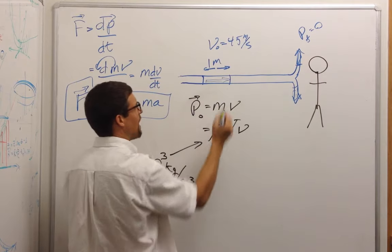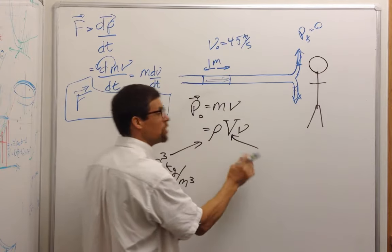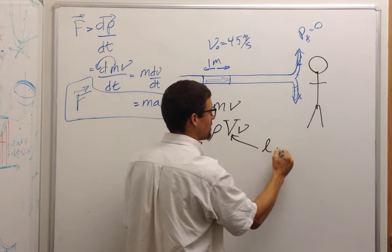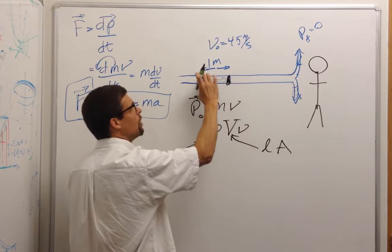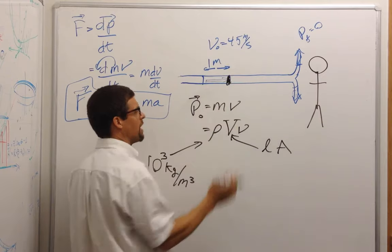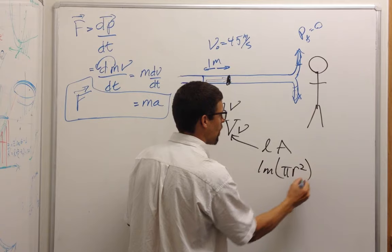So what's the volume of this going to be? Well, it's one meter long. This is a cylinder. So it's going to be length times a cross-sectional area of this circle. Right, so length times a cross-sectional area. So that's just one meter times pi radius squared.